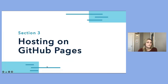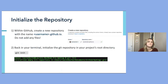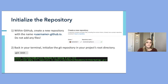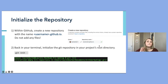Now that we have our base site created, we can begin the process of pushing it to GitHub to host it. First, let's initialize the repository. Within GitHub, create a new repo with your username followed by .github.io — in this case, I'm using loreberg2.github.io. It must be in this format because that is the domain available to you. When you create this new repo, do not add any additional files. Then back in your terminal, initialize the git repository using the 'git init' command.